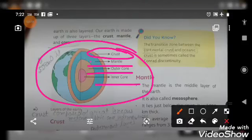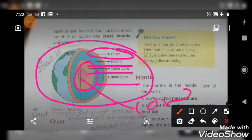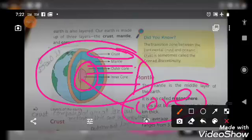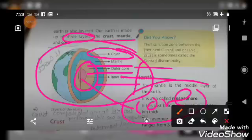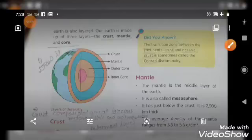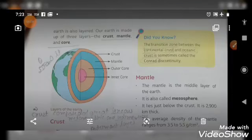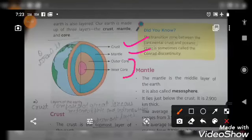You can define it as a core, but we will divide it into two parts. So our Earth is made up of three layers: crust, mantle, and core, which is very important. And from the next video, we will study each part - crust, mantle, and core - in detail.